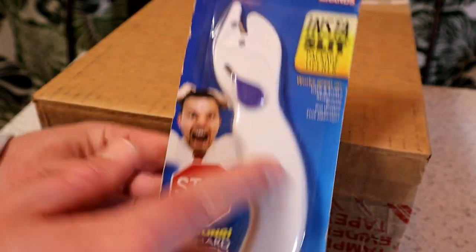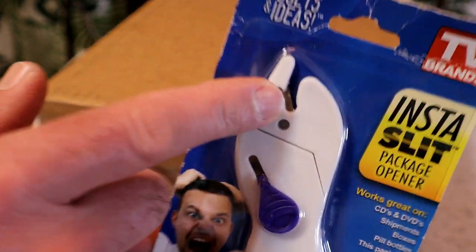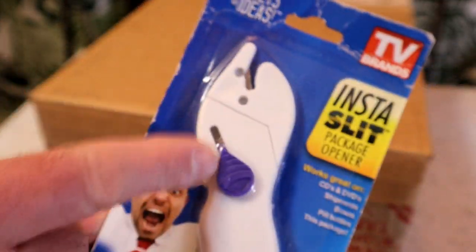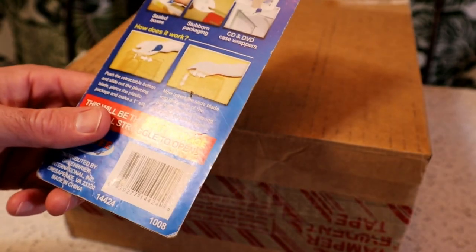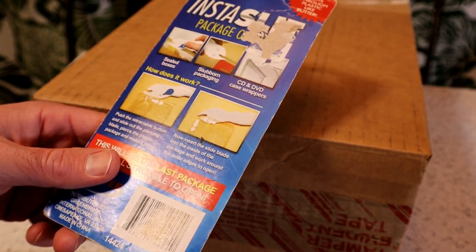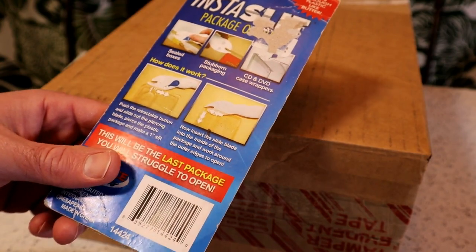And check this out, it's kind of just a plastic handle with a blade as you can see there with kind of a protective feature. Insta Package, Sealed Boxes, Stubborn Packaging, CDs and DVDs, also that hard plastic packaging as well.